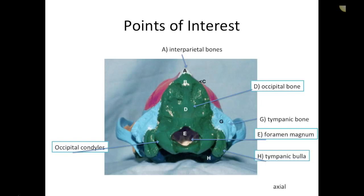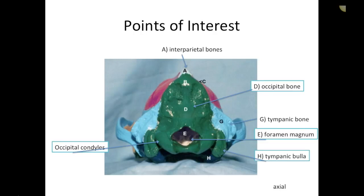Going back to the occipital bone: it has two processes called the occipital condyles that connect to the atlas of the spine, creating the atlanto-occipital joint. The tympanic bullae — plural: bullae — house the middle ear organelles. These are really important tiny structures within the ear. On certain skulls, such as guinea pigs, you'll see quite large tympanic bullae, which corresponds to a more highly developed sense of hearing.